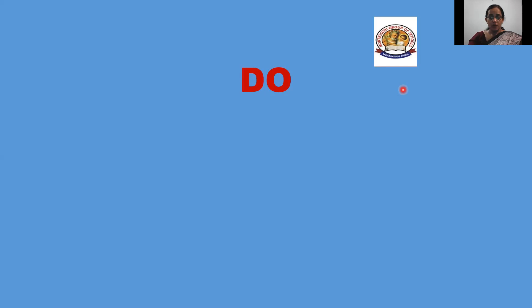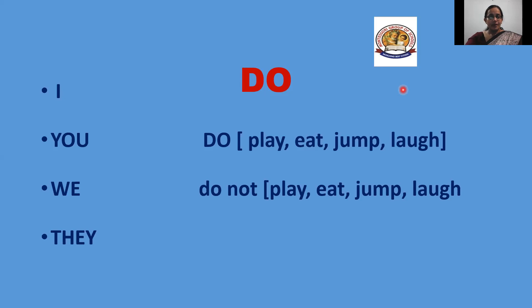Now let us see how do is used in sentences. You can see on the screen: I, you, we, they — do. So with I, you, we and they we use do, and the negative form of do is do not. Do here is something related to doing things — that is play, eat, jump, laugh.